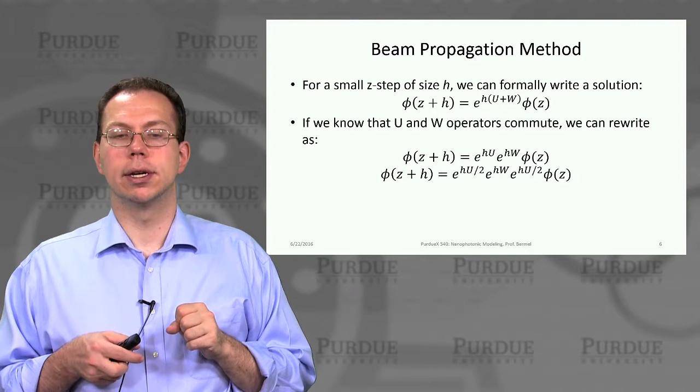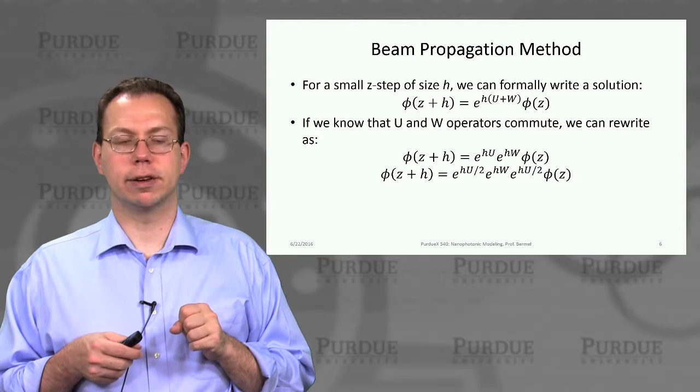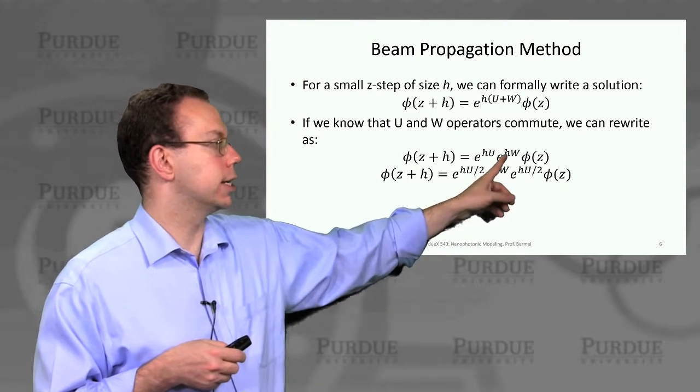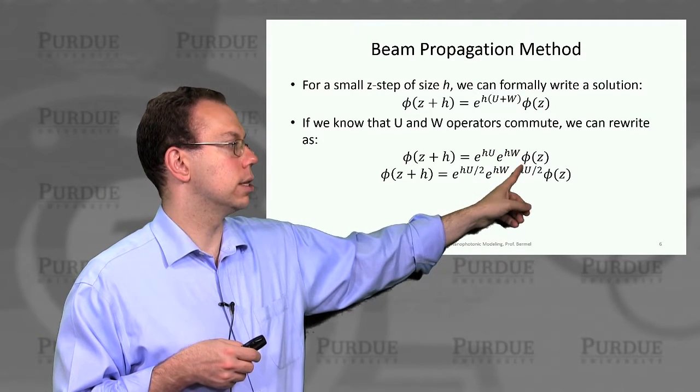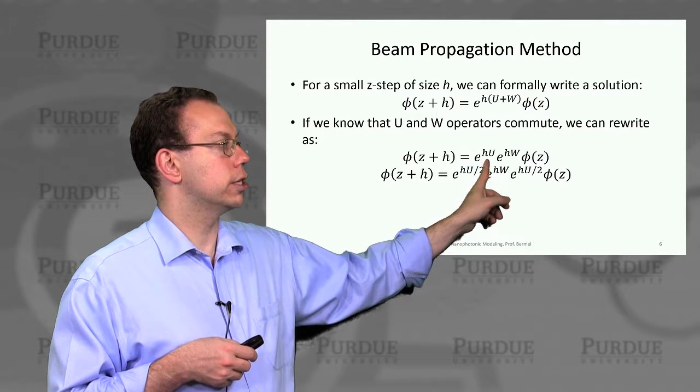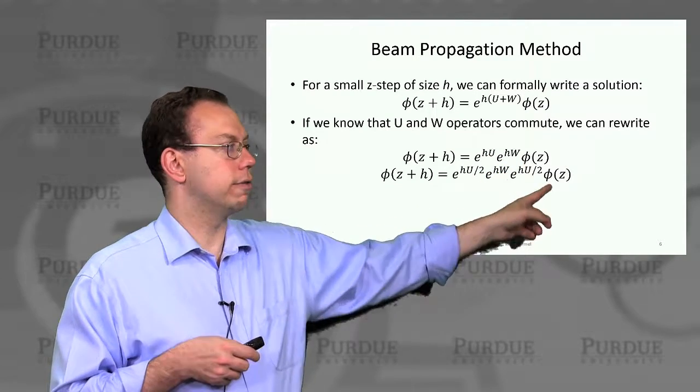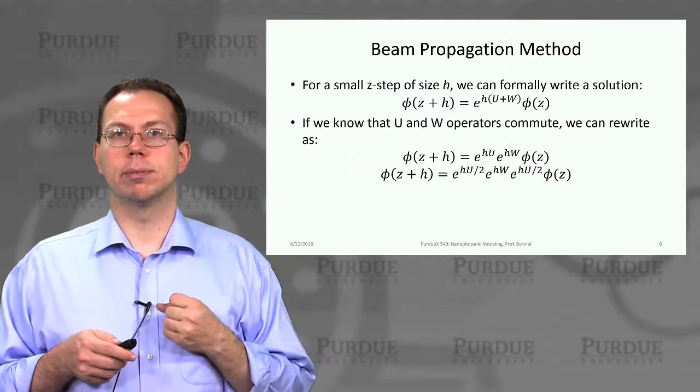if the U and W operators commute, we can rewrite the sum in the exponent as a product of exponents. We write it as e to the hU times e to the hW. Then we can restructure it, applying half before e to the hW and half afterwards, creating a more symmetric form.